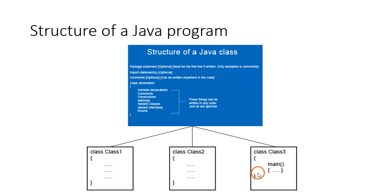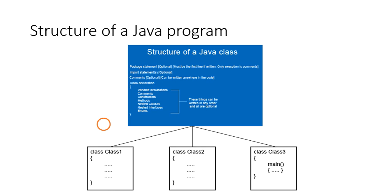In most lab programs you will see more than one class in a program. You might think: can't we do the same thing using only one class? Yes, you can, but it is not the correct way of writing a Java program. The main logic will be in one class, and in another class you will have the main method from where you call your actual logic — so at least you will be having two classes. Writing two or more classes is learning the program in the right way.